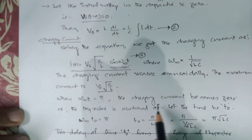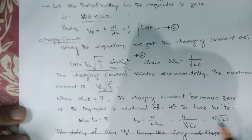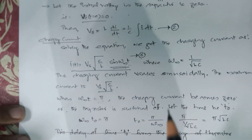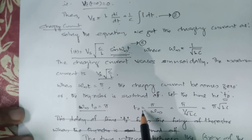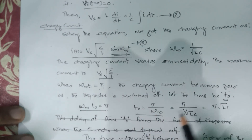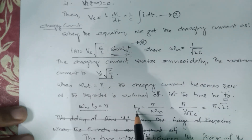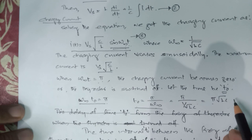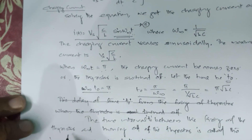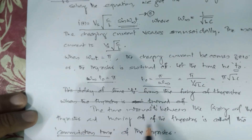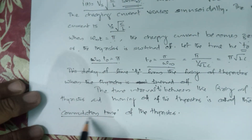When the charging current becomes 0, the thyristor is switched off — we have attained commutation of the thyristor at that time. Let's call this time t0, the time at which commutation happens. So ωm·t0 equals π, or t0 equals π/ωm, which equals π·√(LC). This means at time t0 equals π·√(LC), the thyristor becomes commuted. The time interval t0 between the firing and turning off of the thyristor is called the commutation time.